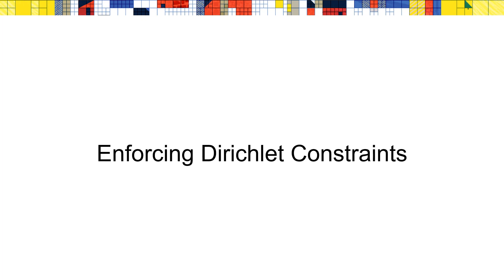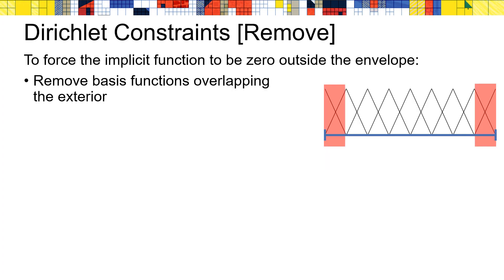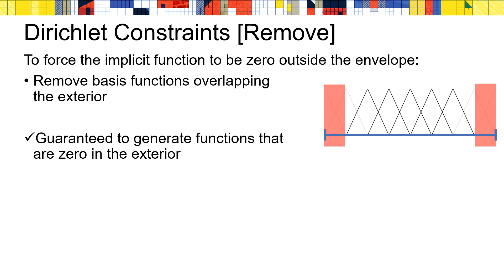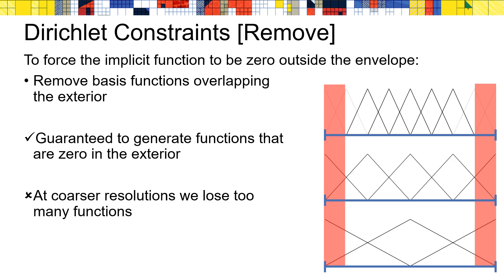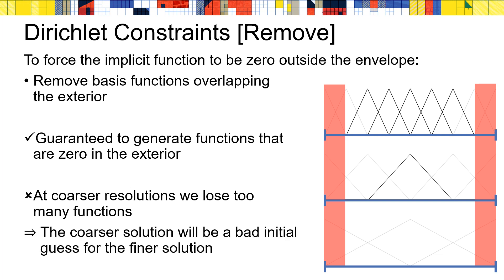Now let's revisit the question of how to impose Dirichlet constraints, forcing the computed indicator function to be zero outside the envelope, or equivalently, forcing it to be supported within the envelope. The easiest way to ensure this is to remove every basis function whose support overlaps the exterior of the envelope. The remaining functions will all be supported in the envelope, as will any linear combination of these functions. For example, if the red region denotes the exterior, we would remove the two leftmost and two rightmost functions. However, at coarser resolutions where the functions have wider support, we would be removing too many functions, implying that the solution obtained at lower resolutions would likely be a poor initial guess for the true solution.